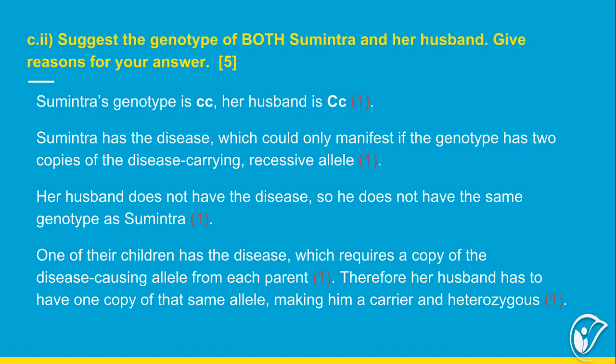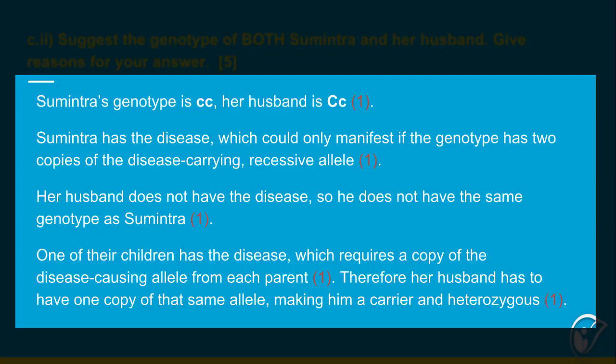The written answer: Sumintra's genotype is lowercase cc; her husband's is capital C, lowercase c. Sumintra has the disease, which could only manifest if her genotype has two copies of the disease-causing recessive allele. Her husband does not have the disease, so he does not share her genotype. One of their children has the disease, which requires a copy of the disease-causing allele from each parent — therefore her husband must have one copy of that allele, making him a carrier and thus heterozygous. A genetic diagram can also be added here.